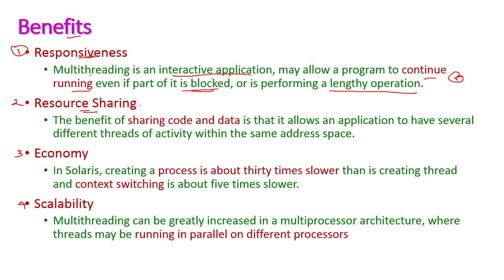The second benefit is resource sharing. Sharing of code and data allows an application to have several different threads sharing the same address space. The third benefit is economy — multi-threading is very economical. In the Solaris operating system, process creation is 30 times slower than thread creation, and context switching is 5 times slower compared to multi-threading.